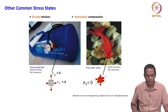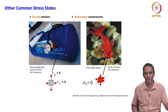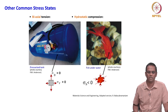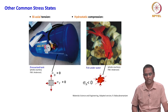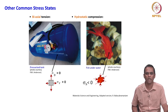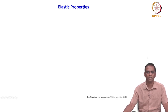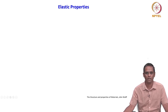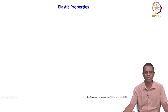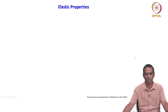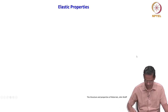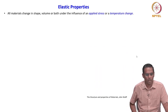Now that we have described the state of stress and strain and looked at simple relationships, we go to properties. Because at the end of the day, with all this knowledge, we should try to understand and relate these theories to the properties of the material. That is our aim. So first we look at elastic properties.